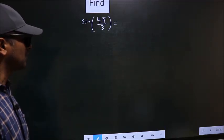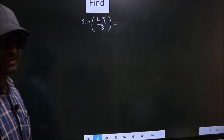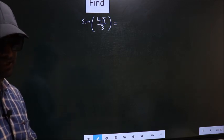Find sin 4π by 3. To find this, we should follow this method C.